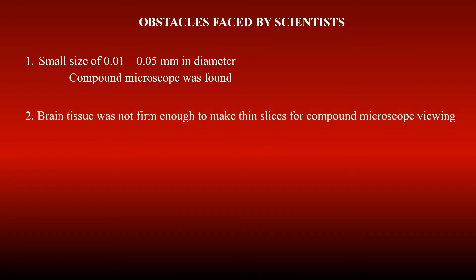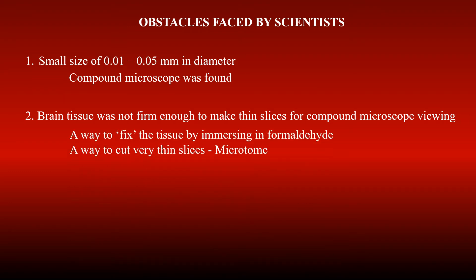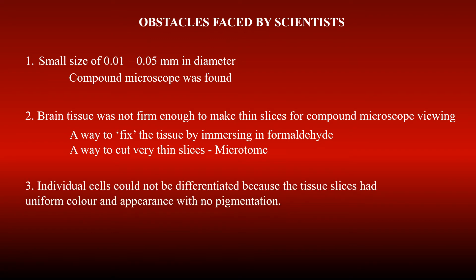Here they faced another obstacle. The brain tissue was not firm enough to make very thin slices required to view them under the microscope. This hurdle was crossed in the early 19th century when scientists found a way to fix or harden the tissue by immersing it in formaldehyde. Around this time they also found a way to cut the brain into very thin slices using a tool called the microtome. Even then they could not view individual cells because brain tissue slices were not pigmented and had a uniform color and appearance.